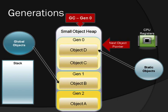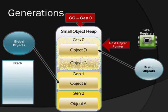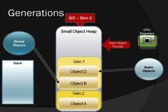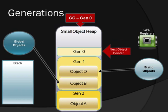A Gen 0 garbage collection is running. It's going to just look at Generation 0 objects, so it has identified C as rootless, and placed D within Generation 1. Gen 0 is now empty, and the next object pointer is reset.